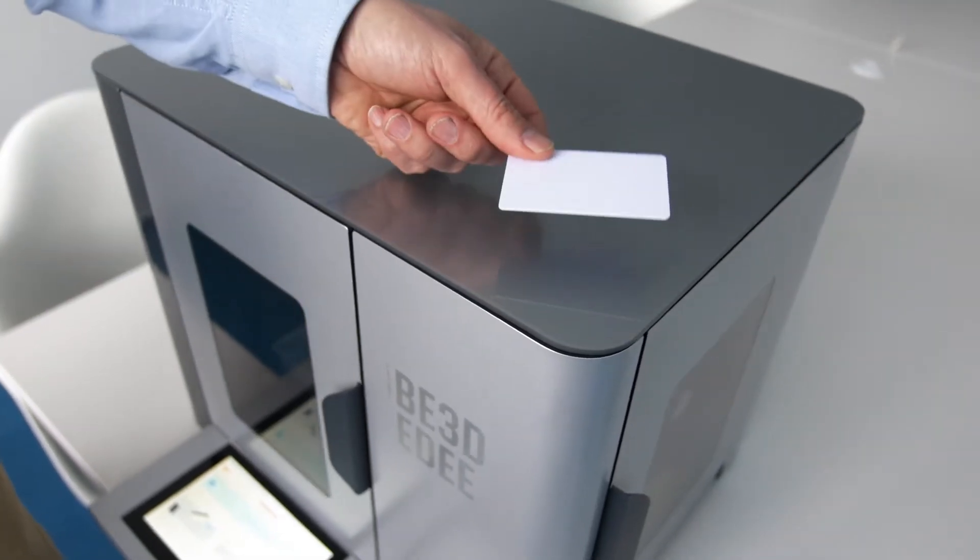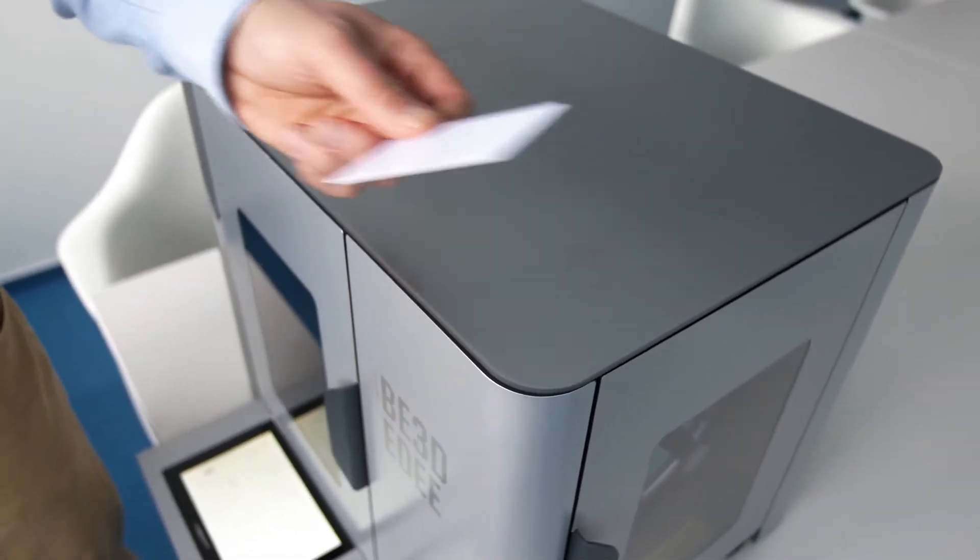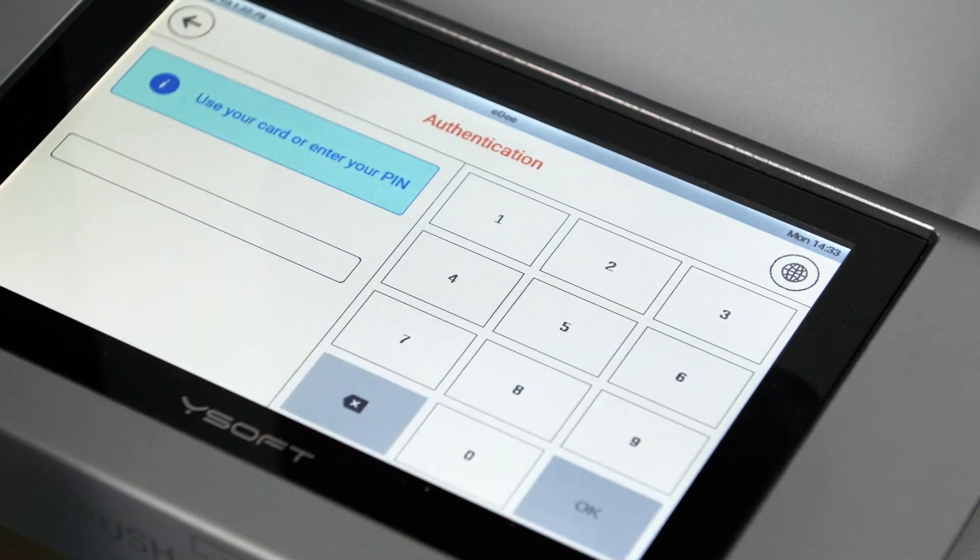If your school uses ID badges, you may want to order your ED printer with the RFID card reader that sits inside the printer. You and students can simply swipe your badge to get access, otherwise you can assign usernames and passwords.